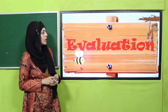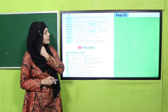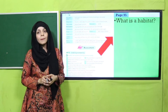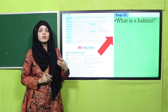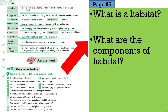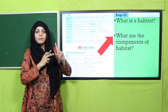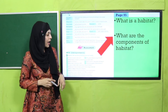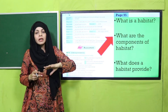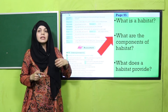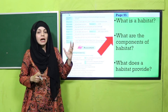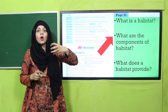For evaluation, turn to page number 95. What is a habitat? A habitat is a place where a living thing can grow, reproduce, eat, drink, and survive. What are the components of a habitat? Food, water, air, and shelter. What does a habitat provide? Food, water, shelter, and air. The living components of a habitat are plants and animals, and the non-living components are soil, moisture, temperature, and light.